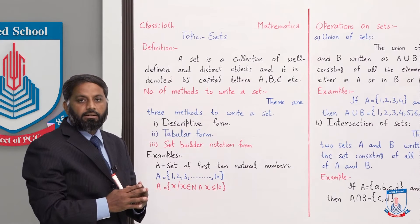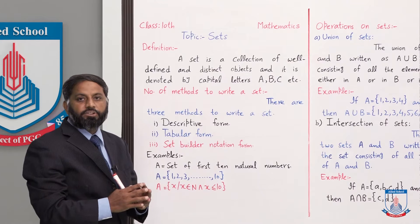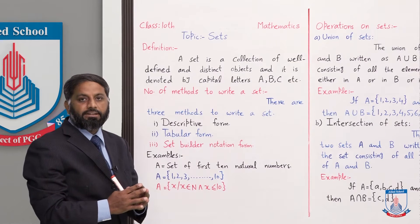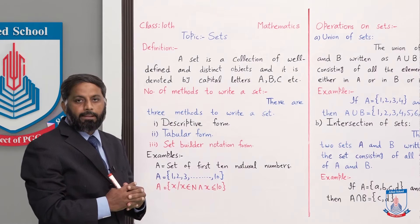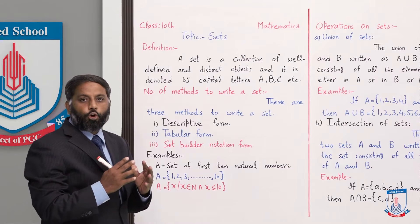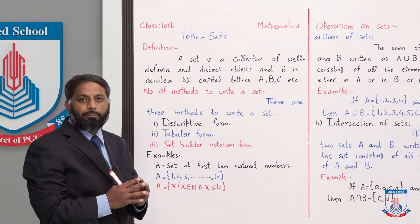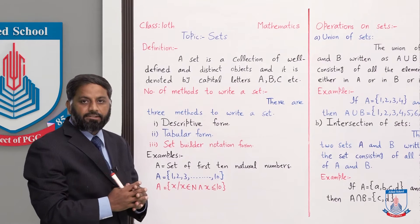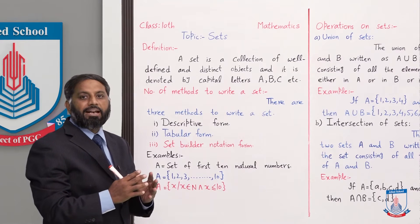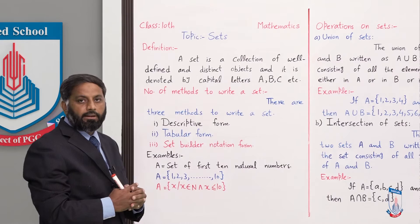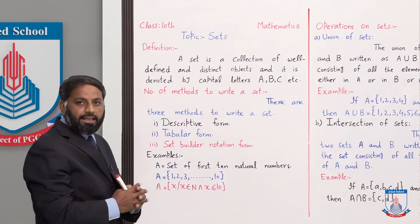Distinct means کہ کسی بھی ایک set میں different values، different alphabets، یا different objects ہوں گے۔ اگر دو objects یا دو alphabets یا دو integers same آ جائیں تو وہ set نہیں کہلائے گا۔